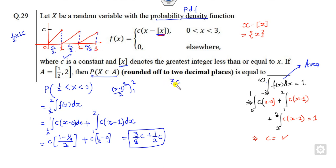So the total area is 3C by 2 equals 1. C is nothing but 2 by 3. So I can substitute this 2 by 3 here. So what will happen is, it is 3 by 8 of 2 by 3 plus 1 by 2 of 2 by 3.